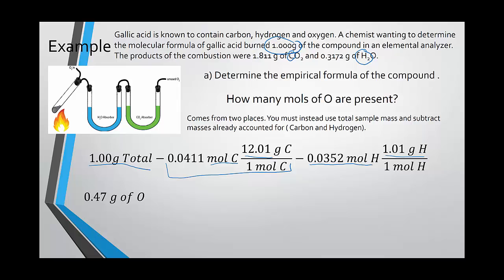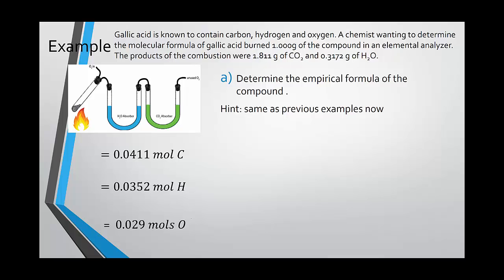From here we get our grams of oxygen. Now of course we don't want to compare grams, we want to compare moles. So we use the molar mass of oxygen to convert between the two. From here we get our moles of oxygen. Now we have moles of carbon, moles of hydrogen, and moles of oxygen. We're right back to where we started on our previous examples that we did in class. From here we can take all of our values and use our trick of division to find a lowest common ratio. So we'll divide everything by the smallest number.